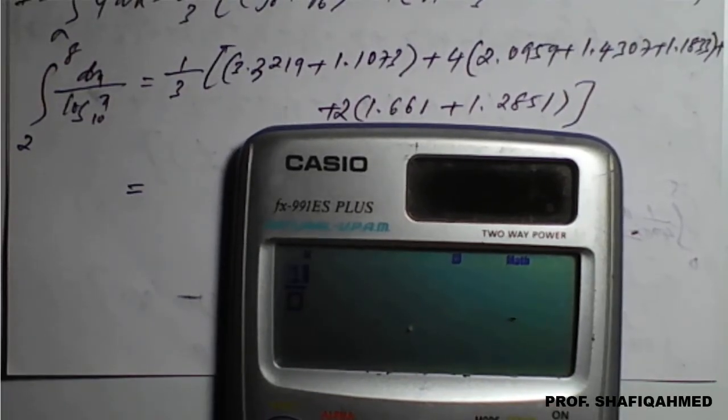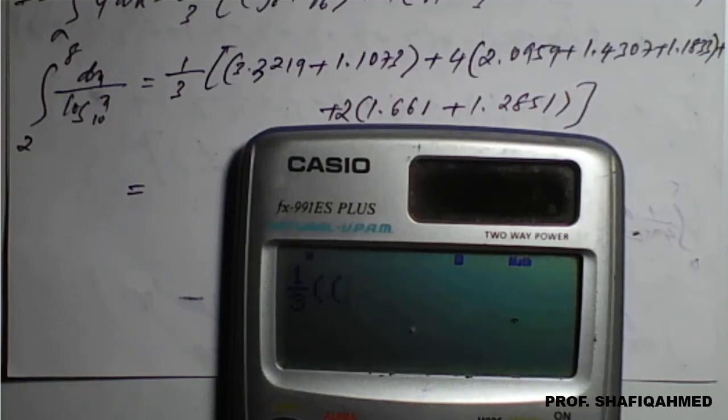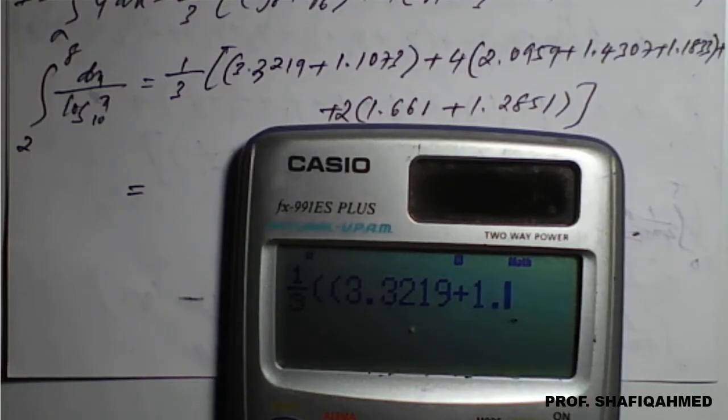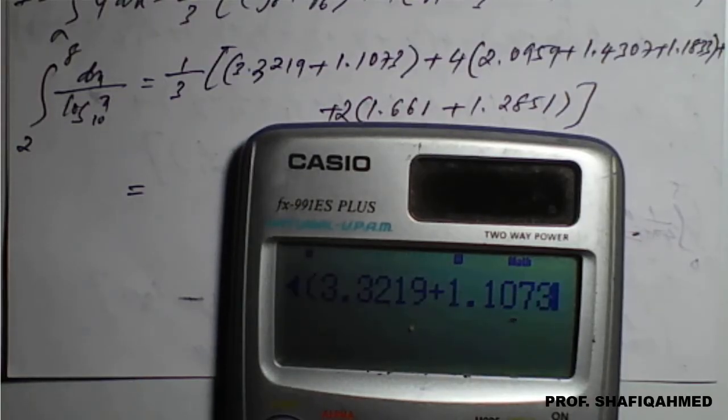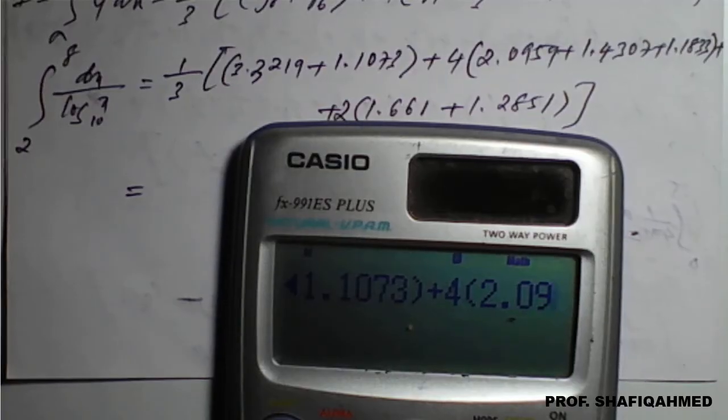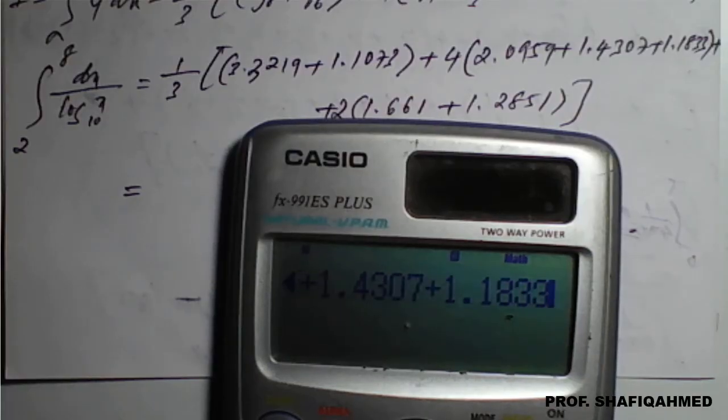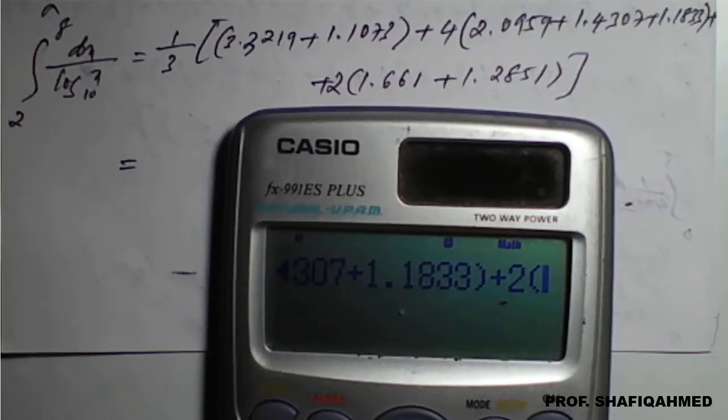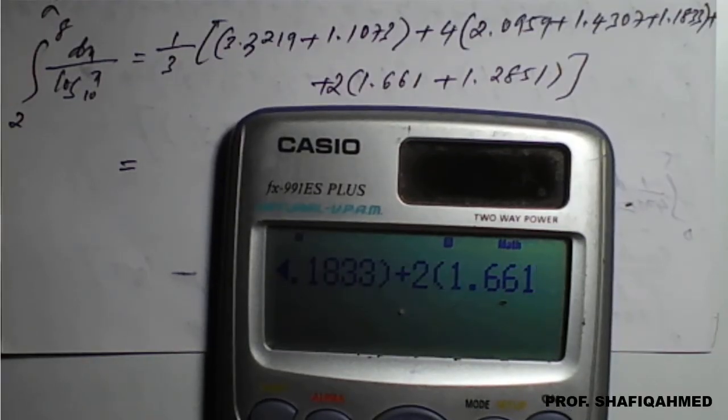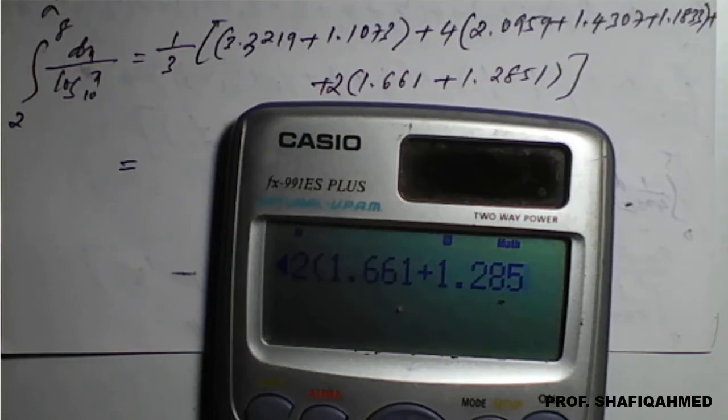So enter fraction 1 divided by 3, brackets, 3.3219 plus 1.1073, close bracket, plus 4 times bracket 2.0959 plus 1.4307 plus 1.1833, close bracket, plus 2 times bracket 1.661 plus 1.2851, close bracket, close bracket.